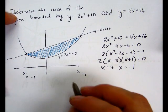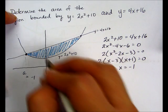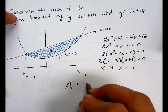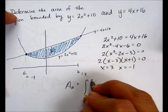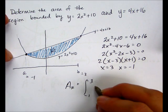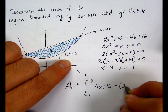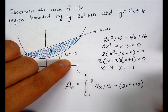So now we can build our integral. The area of the region right here that we have bounded by the two curves is going to be the integral from negative 1 to 3 of the upper function, which is 4x plus 16, minus the lower function, which is 2x squared plus 10 dx.